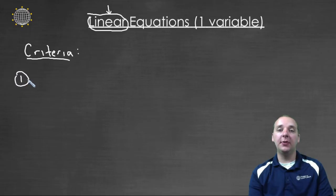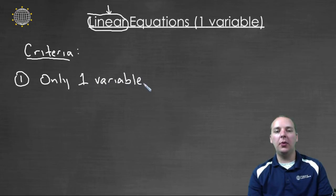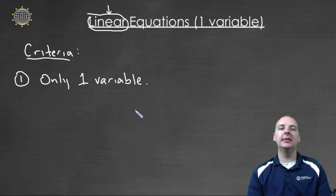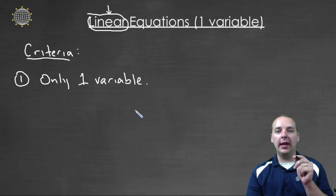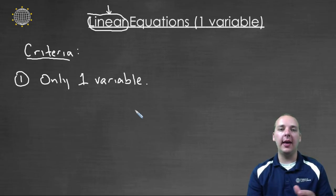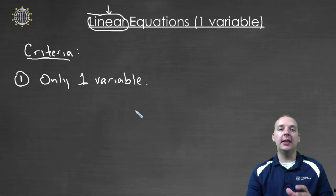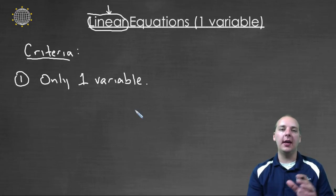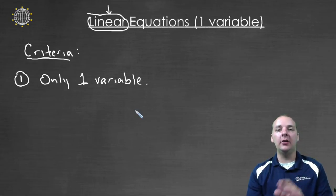The first criteria, at least for now, is that we can have only one variable. Now that's a little misleading. What I mean when I say that is not literally one x in the whole equation. What I mean is one type of variable, meaning only x's, or only y's, or only k's. You can have fifty x's, that's not the issue, but the point is that they can only be x's. You can't have x's and y's.